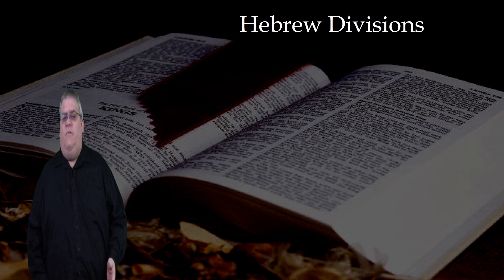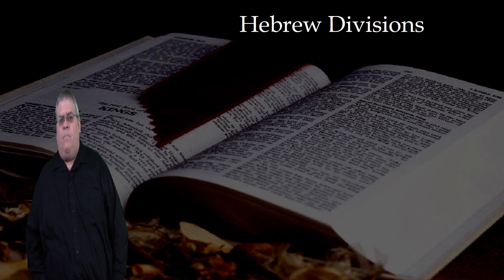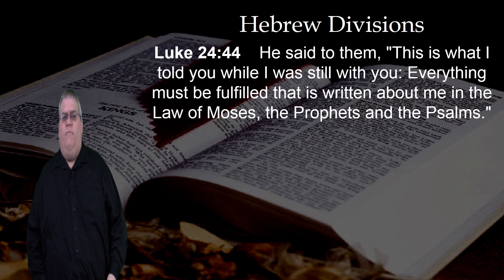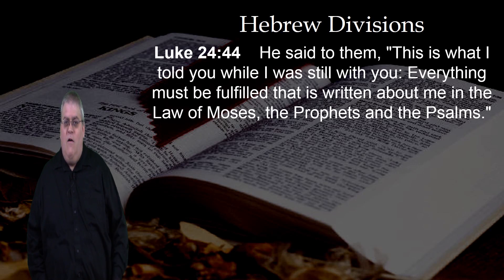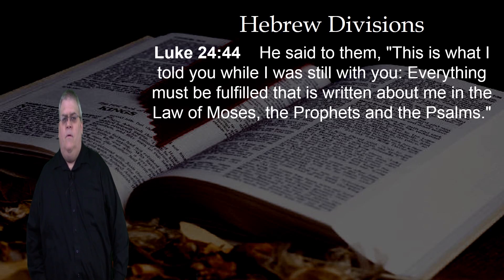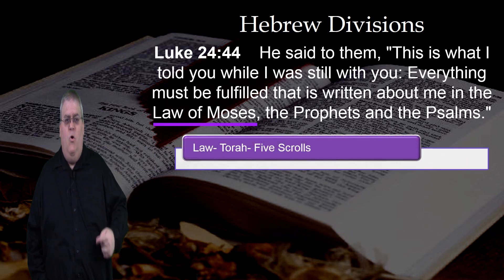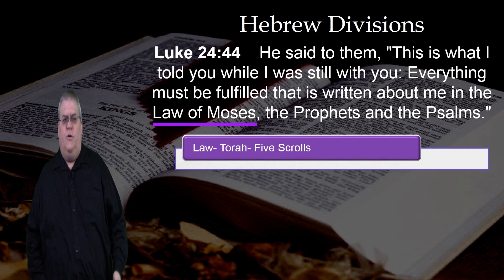The Hebrew divisions can actually be seen in the way that Jesus describes the Old Testament. We see in Luke chapter 24, verse 44, Jesus said, 'This is what I told you while I was still with you. Everything must be fulfilled that is written about me in the Law of Moses, the Prophets, and the Psalms.' In this verse, Jesus mentions the three categories of the Hebrew Bible. First is the Law of Moses, also called the Torah.